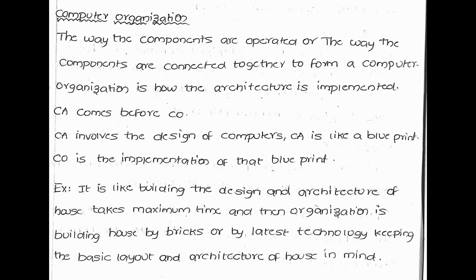Computer organization is the way the components are connected together to form a computer. Organization is how the architecture is implemented. Computer architecture (CA) comes before computer organization (CO). CA involves the design of computers and is like a blueprint, while CO is the implementation of that blueprint.